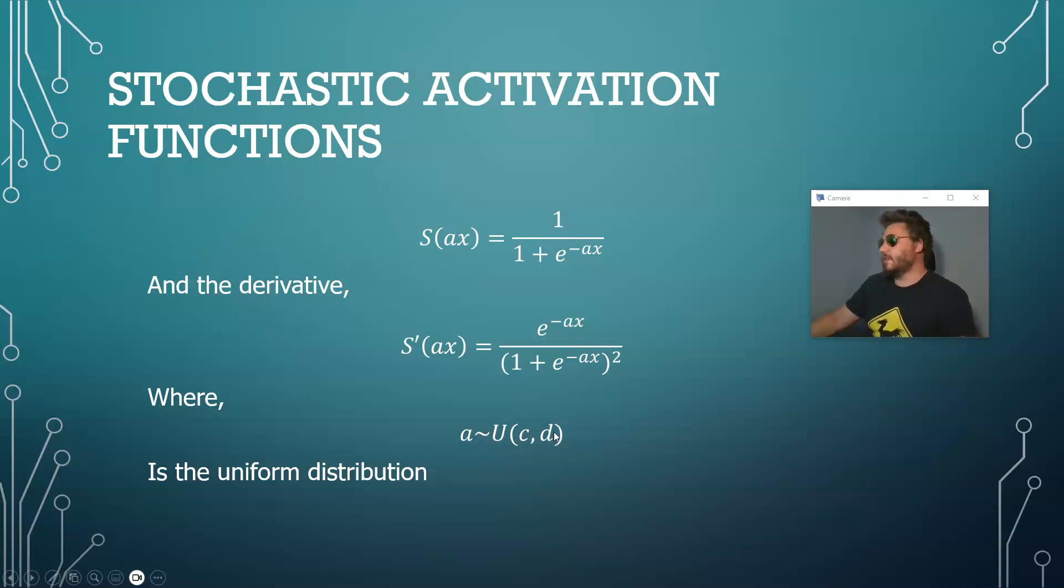And what we say is that a is distributed by a probability distribution. Could be probability mass function, it could be probability density, could be just about anything as long as this variable is somewhat random and you have the values that you want to deal with.